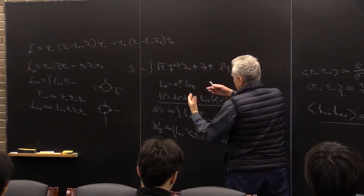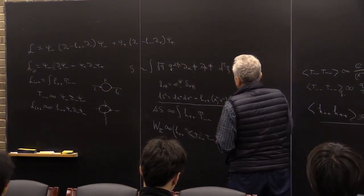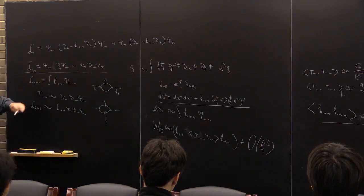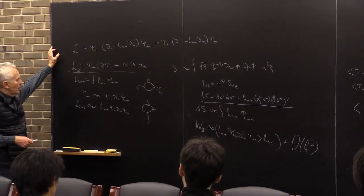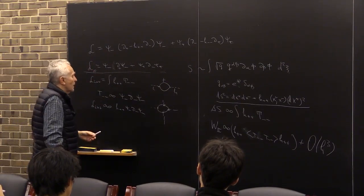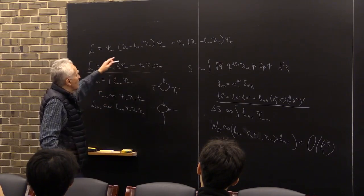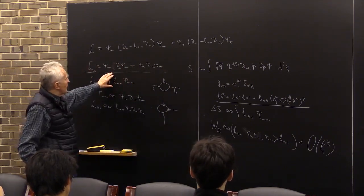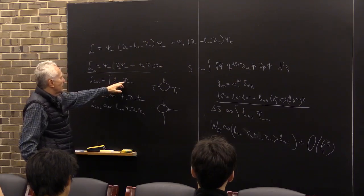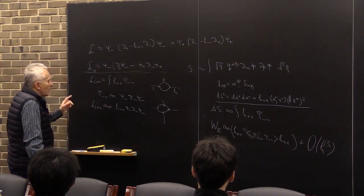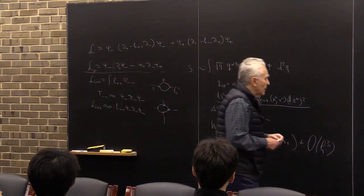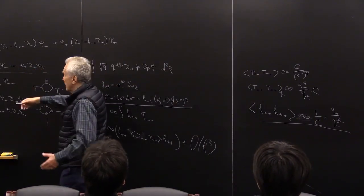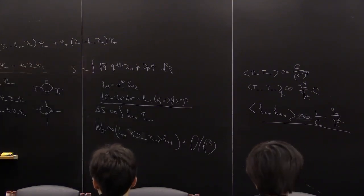Now the crucial point: let's calculate the correction to the Green's function. This was the Ising model — Majorana fermions, one species — now coupled to gravity. The gauge invariance, or diffeomorphism invariance, is related to the conservation of T₋₋. What we will discuss is how the anomalous dimensions of these fermions are drastically modified by gravity. We will discuss that in a moment.